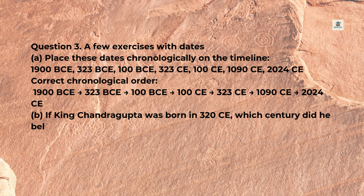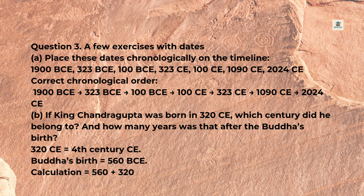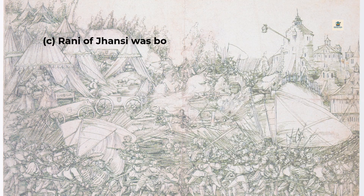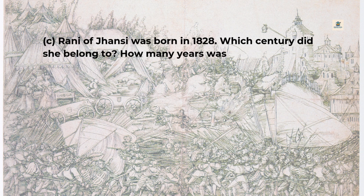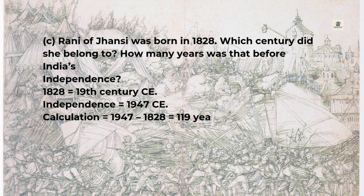B — If King Chandragupta was born in 320 CE, which century did he belong to, and how many years was that after the Buddha's birth? 320 CE equals the 4th century CE. Buddha's birth was in 560 BCE. Calculation: 560 + 320 − 1 = 879 years after Buddha's birth. C — Rani of Jhansi was born in 1828, which is the 19th century CE. Calculation: 1947 − 1828 = 119 years before India's independence.